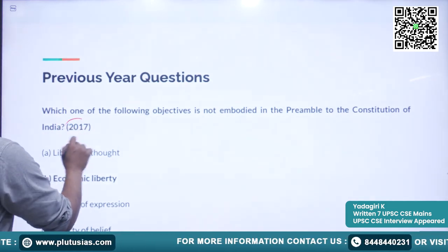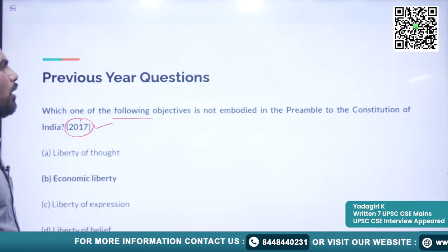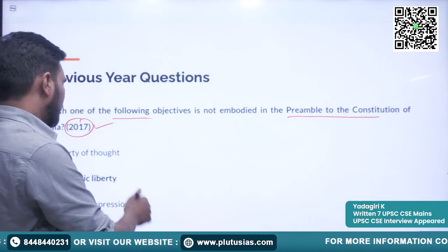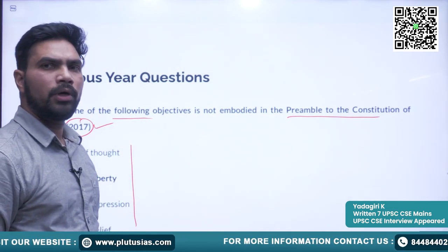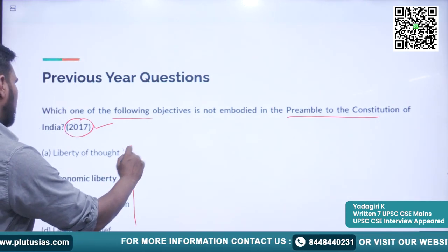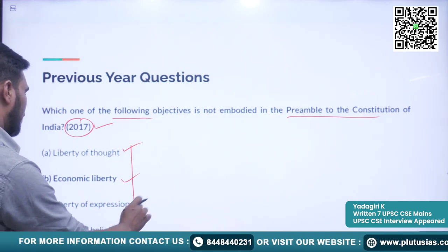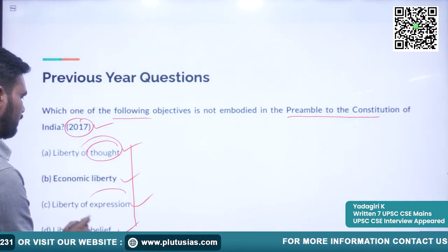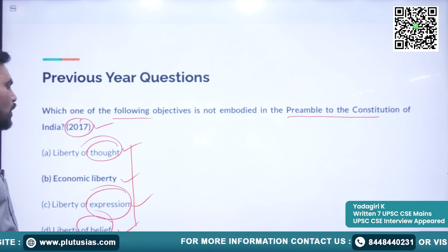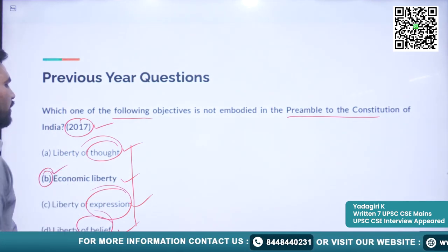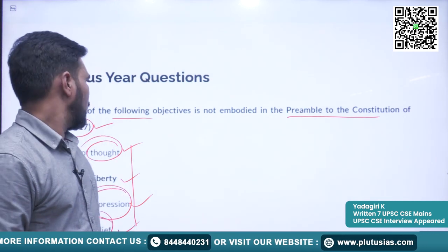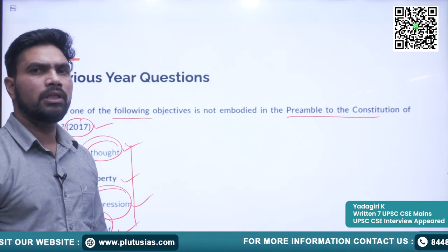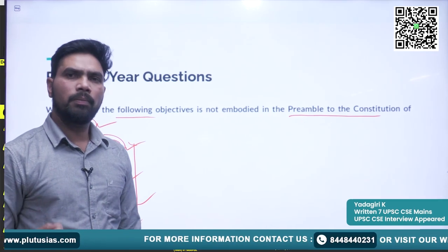The next question is from 2017: 'Which of the following objectives is NOT embodied in the preamble of the constitution of India?' The options are: (A) liberty of thought; (B) economic liberty; (C) liberty of expression; (D) liberty of belief. The correct answer is B — economic liberty — as it is not mentioned in the preamble. This is why it is important to remember the exact words mentioned in the constitution.